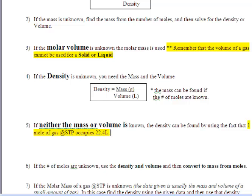Now if neither the mass or the volume is known, the density can be found by using the fact that one mole of gas at STP occupies 22.4 liters. This is really important. So we get density equals molar mass over 22.4 liters.